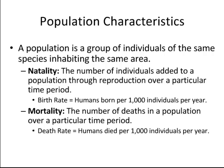Population characteristics: a population is a group of individuals of the same species found in the same area. All the people in your town are that town's population; all humans in your state are your state's population. Similarly, all the largemouth bass in your local lake are the population of bass in that lake. A species is a group of animals so similar genetically that they can breed together to produce offspring that can also breed together.